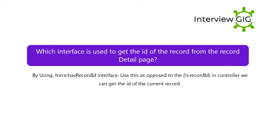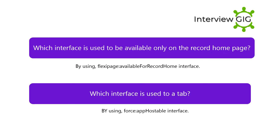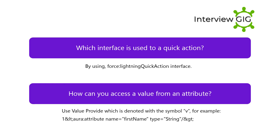Which interface is used to get the ID of the record from the record detail page? By using force:hasRecordId interface. Use this — as opposed to v.recordId — in the controller to get the ID of the current record. Which interface is used to be available for all pages? By using flexipage:availableForAllPageTypes. Which interface is used to override a standard action? By using lightning:actionOverride. Which interface is used to be available only on the record home page? By using flexipage:availableForRecordHome. Which interface is used for a tab? By using force:appHostable. Which interface is used for a quick action? By using force:lightningQuickAction.